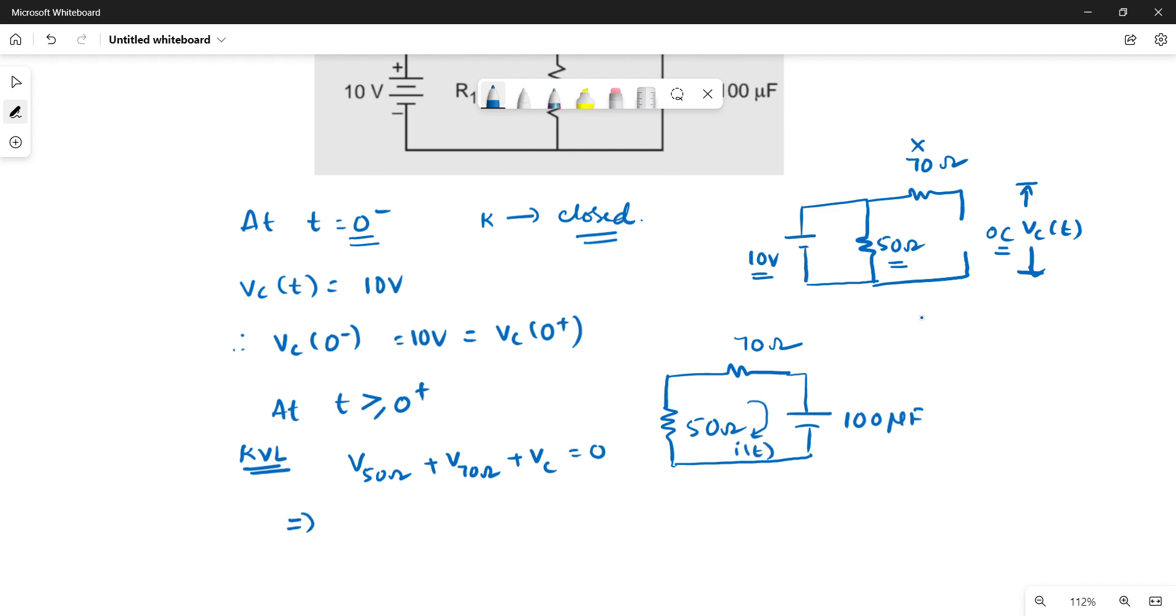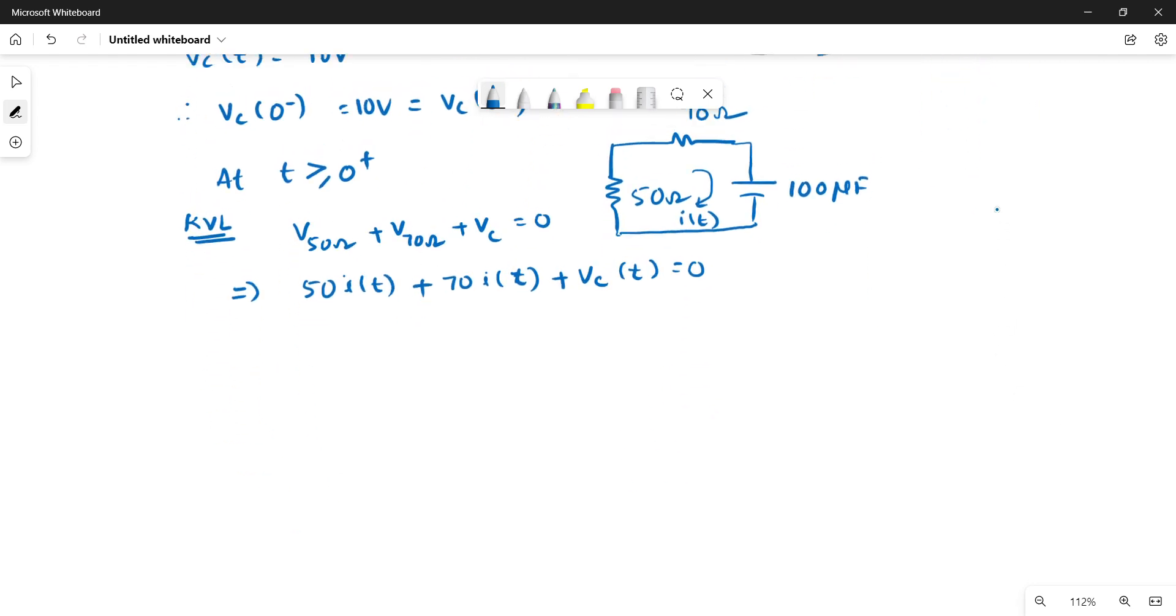Let us imagine in this loop we have i of t current flowing. Then 50 i of t plus 70 i of t plus voltage across the capacitor Vc of t equals zero. So this would be 120 i of t plus Vc of t equal to zero.